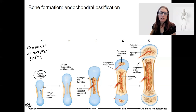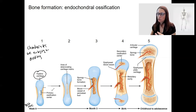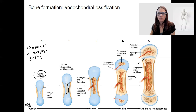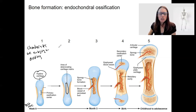In the middle, this is going to become the primary ossification center — the first and primary place where ossification is going to occur. This happens because as the bone starts to lengthen due to the dividing chondrocytes, the cartilage in the middle becomes too large. The chondrocytes themselves start to die because they no longer have nutrients available to them — the cartilage organ is getting too big — so chondrocytes start to die in that primary ossification center.